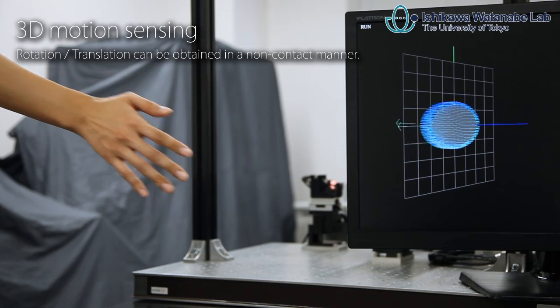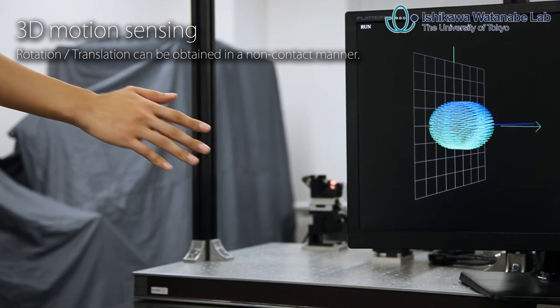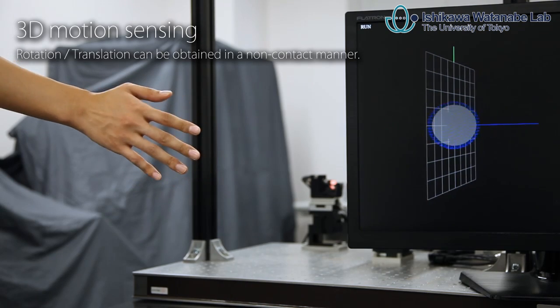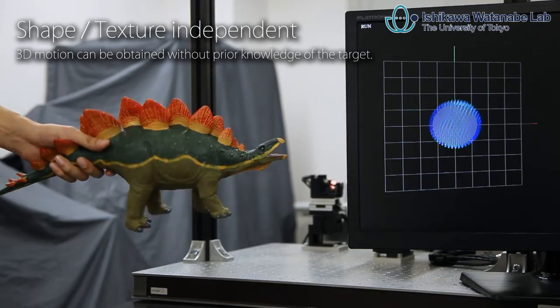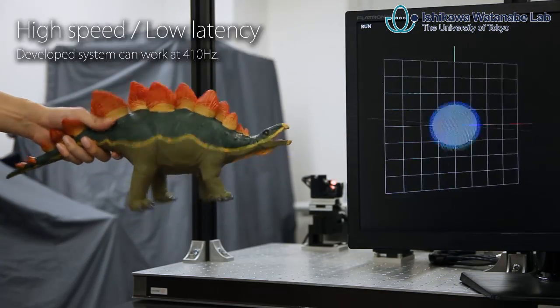By using a multiplexed laser, rotational and translational velocity can be obtained without prior knowledge of the target. This method does not depend on the target shape and texture.